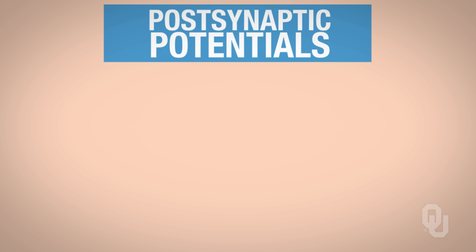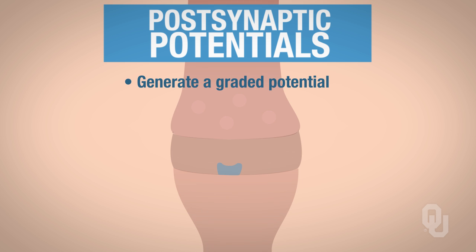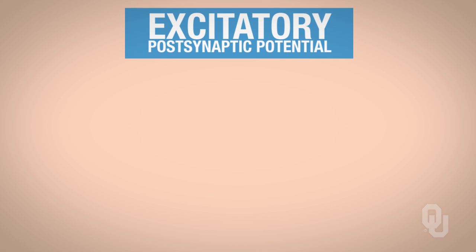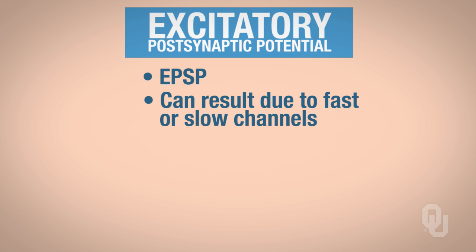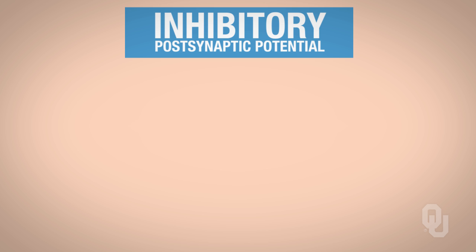When we talk about postsynaptic potentials, it's really important that you understand a postsynaptic potential is a type of graded potential. When the neurotransmitter binds to the ligand-gated channel, that can generate a graded potential. We generate graded potentials on dendrites and cell bodies of neurons. We actually have two different types of postsynaptic potentials: you can have an excitatory postsynaptic potential, which we call an EPSP — that's the appropriate abbreviation that all physiologists use — and this EPSP can result due to fast channels or slow channels. The other type is called an inhibitory postsynaptic potential, abbreviated IPSP.